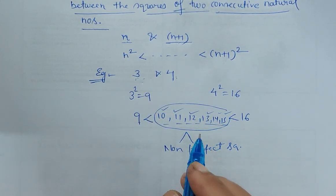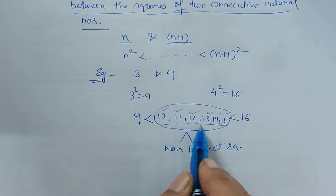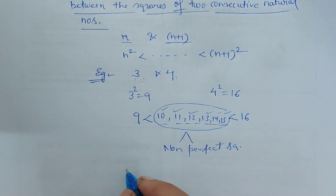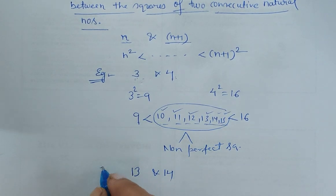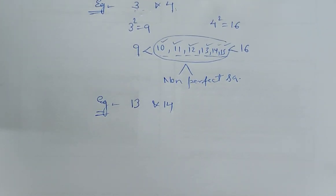Will it be that easy to calculate the number of such numbers between any two consecutive numbers? If I write 13 and 14, this is example 2. What are all the non-perfect squares between the square of this and square of this?